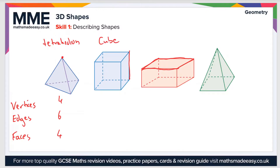A cube is like a three-dimensional square — all the faces are squares. The number of vertices is 8, the number of edges is 12, and the number of faces is 6.